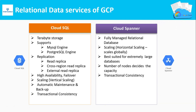Under Relational Data Services of GCP, GCP offers Cloud SQL and Cloud Spanner. Cloud SQL can hold up to TB storage capacity and supports two database engines: MySQL and PostgreSQL. Cloud SQL offers many features including replication, high availability, failover, and vertical scaling. Vertical scaling means increasing the CPU, RAM, and storage in a single Cloud SQL instance.